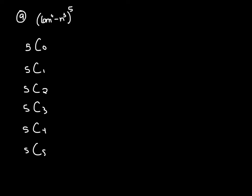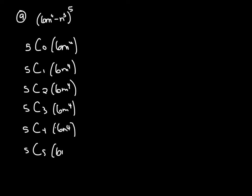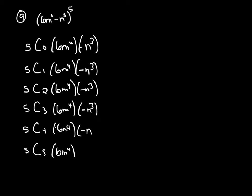Whatever's in the first spot of our parenthesis — 6m to the fourth — goes in the first parenthesis for each term. In the second spot we have negative n cubed, which goes in our second parenthesis for each term. With expansions, whatever number is to the right of the C goes to the right parenthesis exponent, running 0, 1, 2, 3, 4, 5. To find the first parenthesis exponent, subtract: 5 minus 0 is 5, then 4, 3, 2, 1, 0 as we go down.